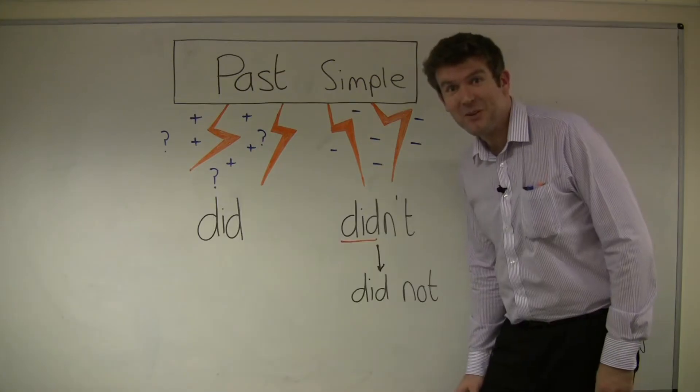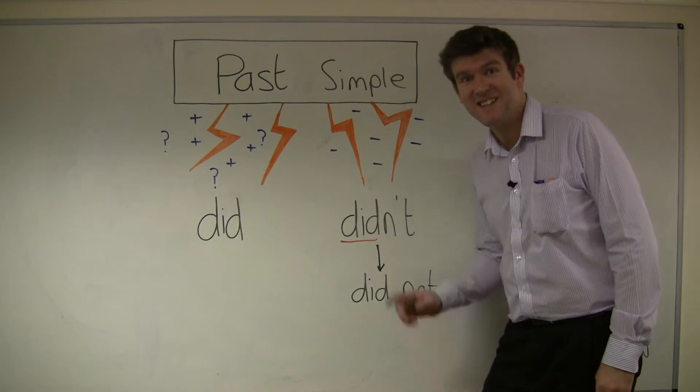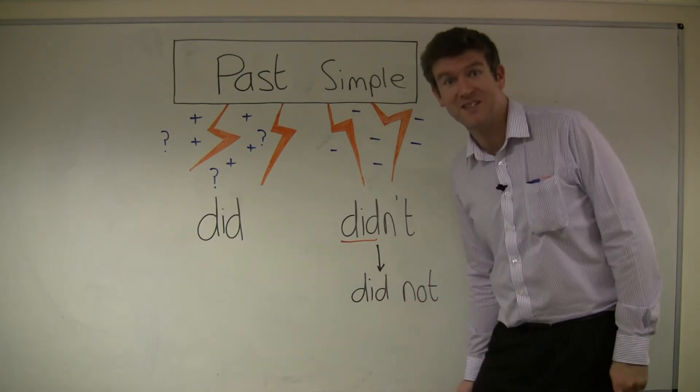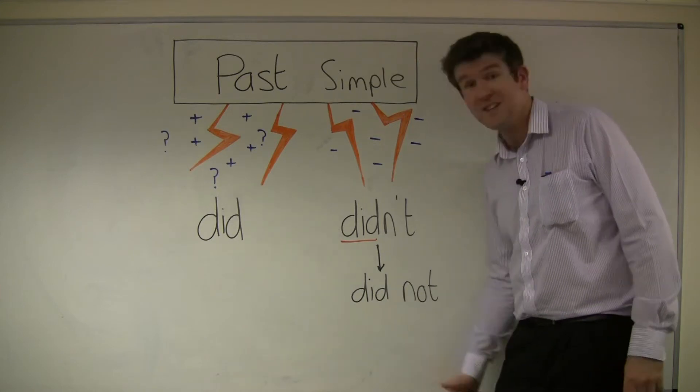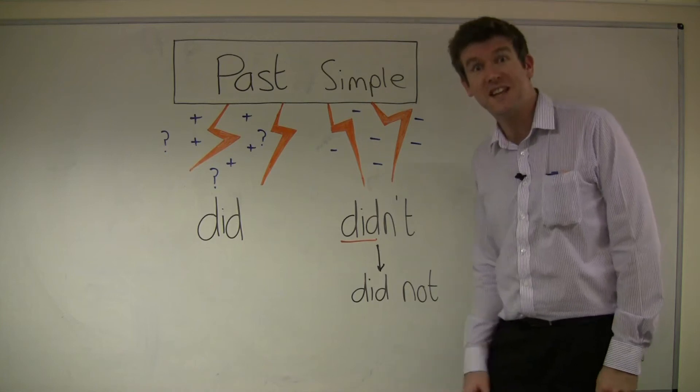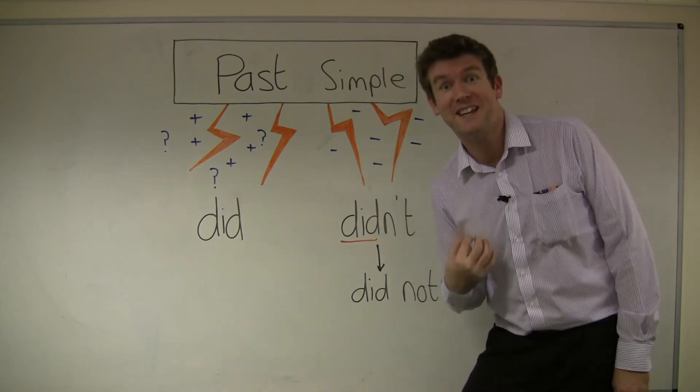Using the past simple we always use the words did and didn't. Did is used in questions and sometimes positive sentences. Didn't is always used in negative sentences. Didn't is the same as did not, but when we speak we usually say didn't.